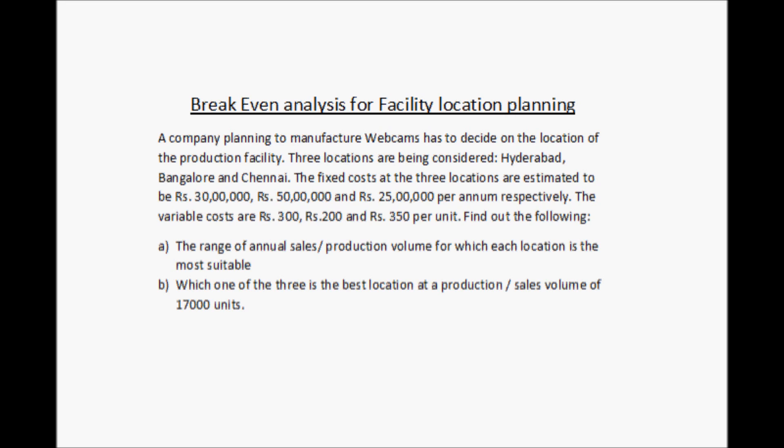And part B: which one of the three is the best location at a production or sales volume of 17,000 units? A company is looking to set up a production facility with three options — Hyderabad, Bangalore, and Chennai. The fixed cost and variable cost per unit have been given, but the production volume is not yet decided. We need to find the range of production volume for which each location is most suitable, and then answer part B for 17,000 units.